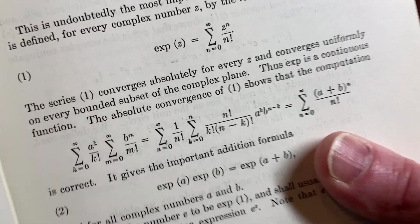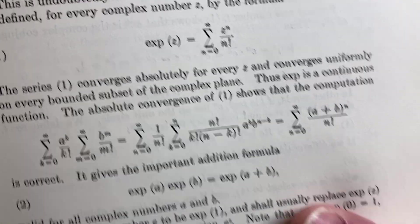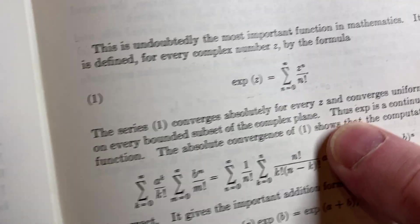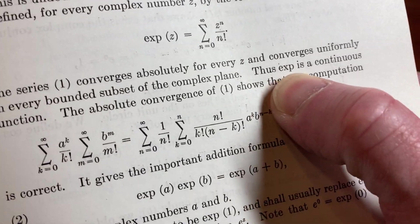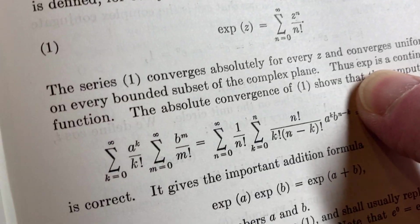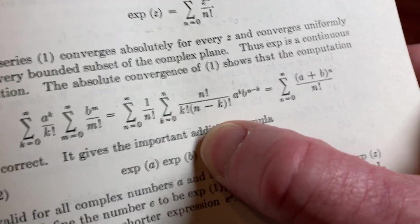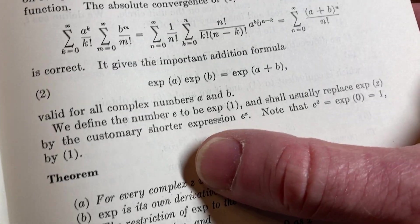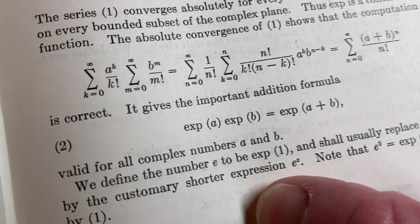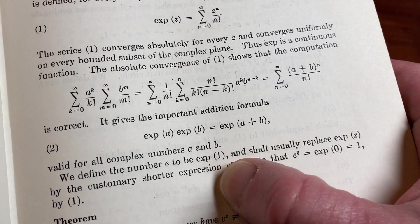You get that feeling from it right away. This is a graduate level math book on real and complex analysis. Just so cool. I love how it's just so concise—to me that's beautiful. Thus the exponential function is a continuous function. The absolute convergence shows that the computation is correct.